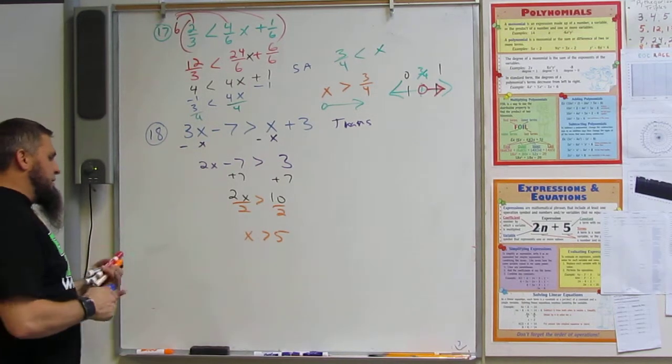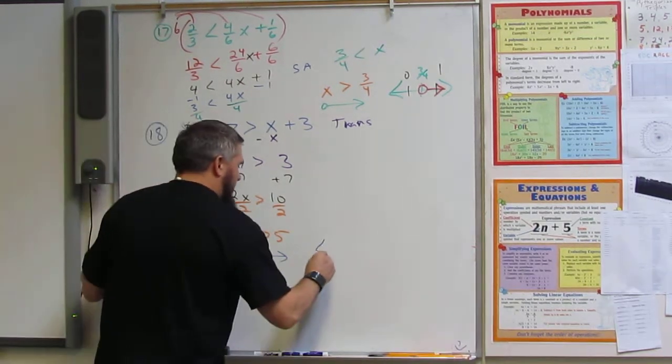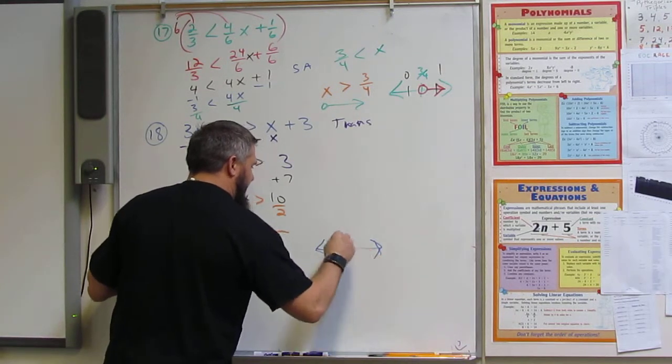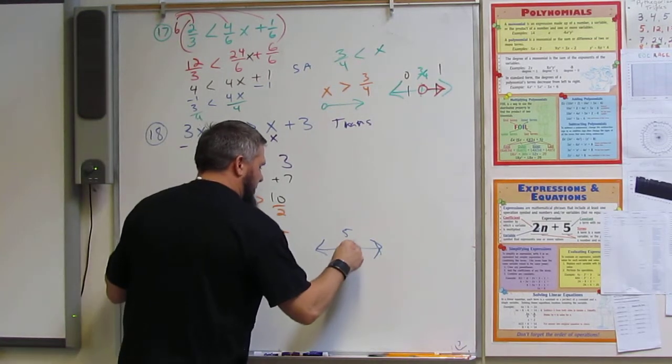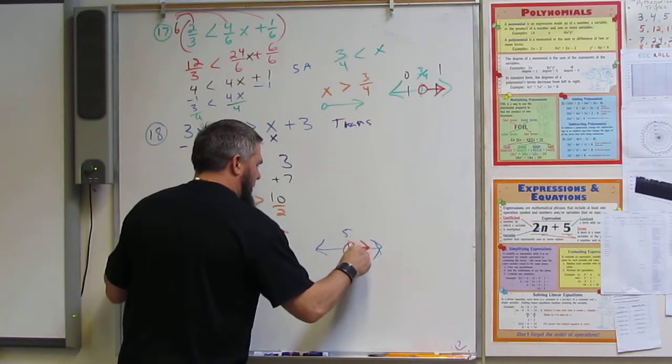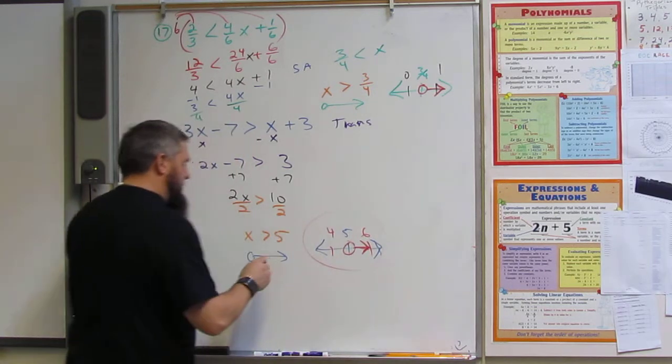Now I know that is an arrow that goes this way, with an open circle. So I have a 5 in the middle, and I'm going to put an open circle. It's going to go this way, and there's going to be a 6 here and a 4 here, and I'm good to go.